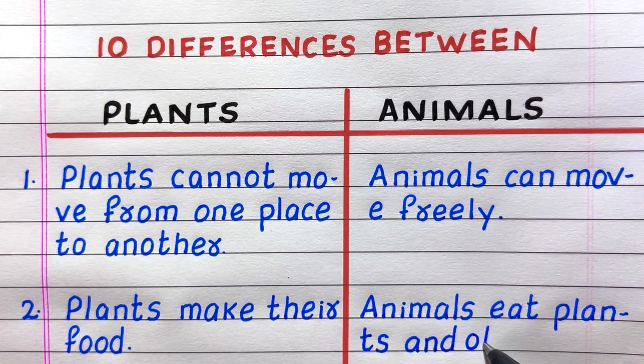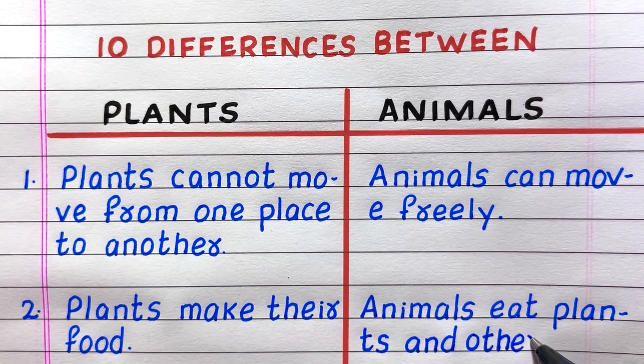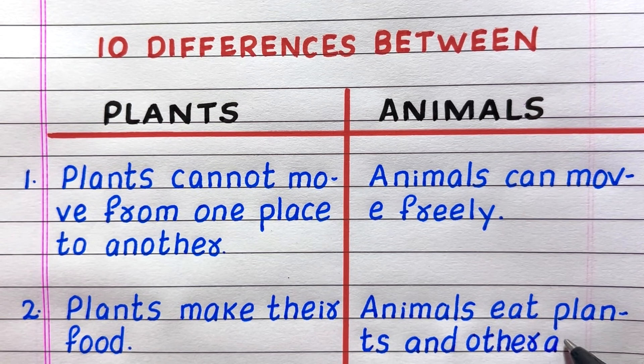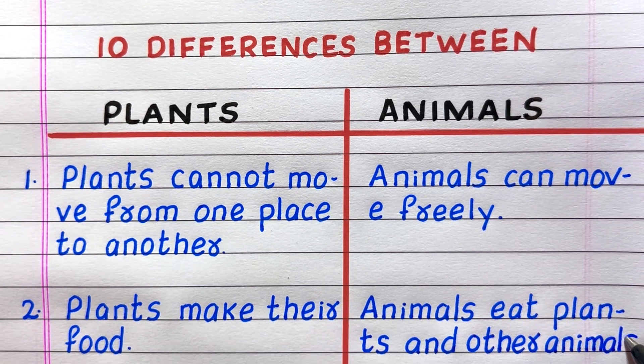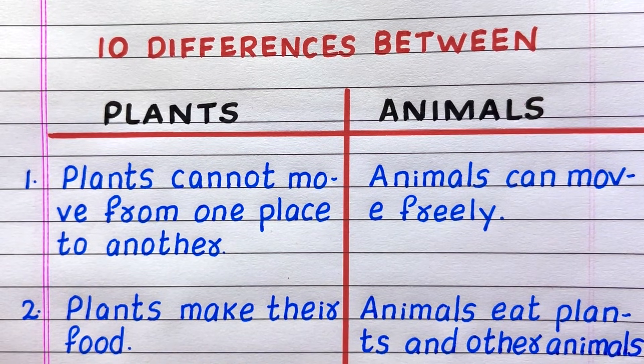Second difference: plants make their own food, while animals eat plants and other animals.